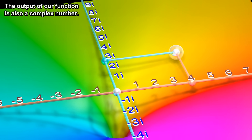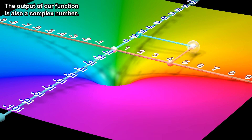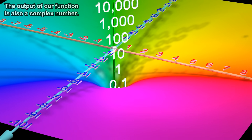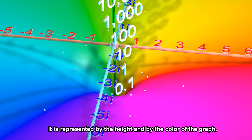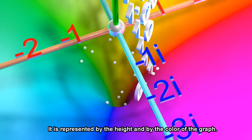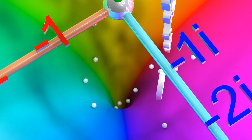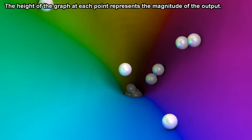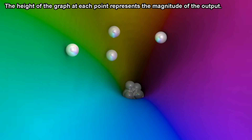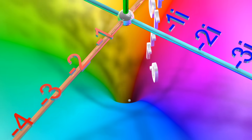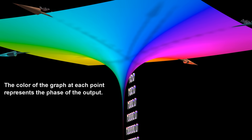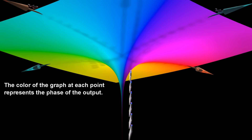The output of our function is also a complex number. It is represented by the height and by the color of the graph. The height of the graph at each point represents the magnitude of the output.